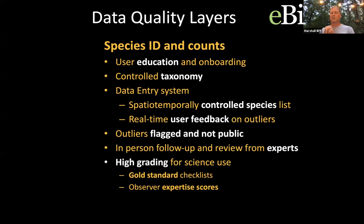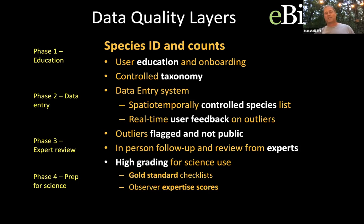For analyses like the magnolia warbler migration model, we can high-grade the data and use only the very best checklists, since we're collecting so much we can choose not to use data that doesn't meet the highest science standard. We can also weigh observer expertise — measuring how many birds people are finding relative to what we expect, then weighting those observations differently in models to ensure that very experienced observers have higher weight. That amounts to three phases: education before you start, data entry where we spend most of our cycles, and expert review plus how we prep the data for science.